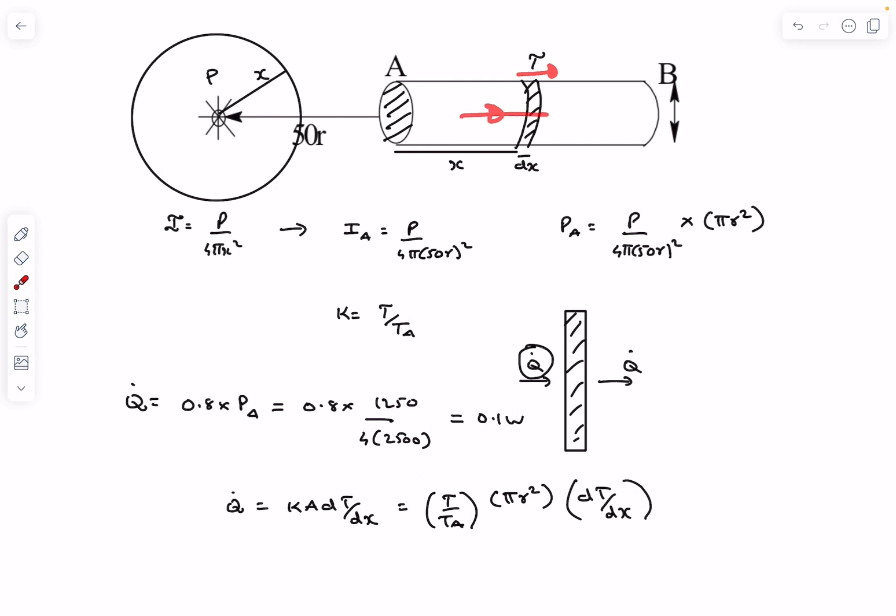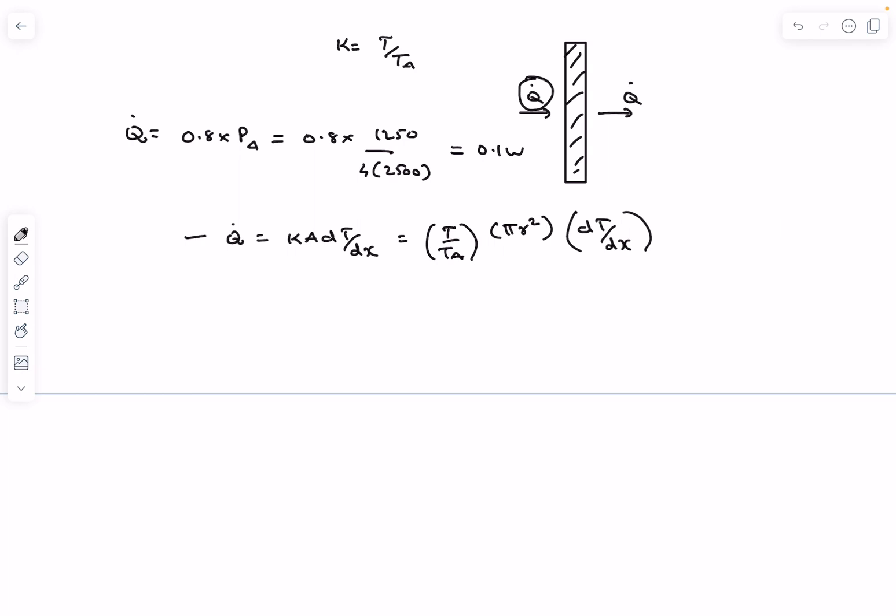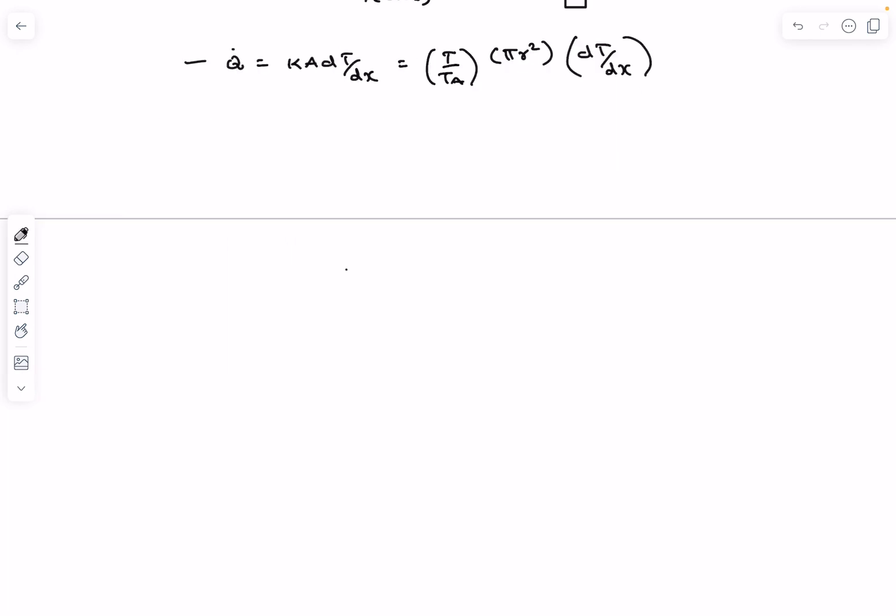Because heat is flowing in this direction, so heat always flows from a higher temperature to lower temperature. According to our convention that we took, we took x to be positive in this direction and in that direction T decreases, so dT/dx is negative. So we have to put a minus sign over here. So now let's rearrange all the terms.